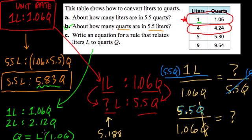Because we're looking at this from this perspective. Plug in the number of liters you have, in part B it was 5.5 liters. Multiply that by 1.06, and you have the quarts.